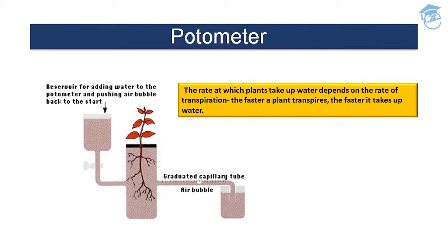Now what is a potometer? The rate at which plants take up water depends on the rate of transpiration — the faster a plant transpires, the faster it takes up water. The potometer consists of a reservoir for adding water and pushing an air bubble back to the start, a plant kept in a container, a graduated capillary tube, and air bubbles. This way you can determine the rate at which a plant takes up water based on the rate of transpiration.